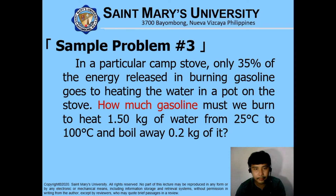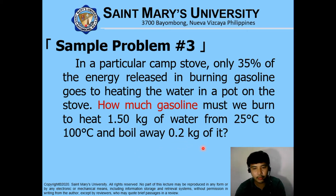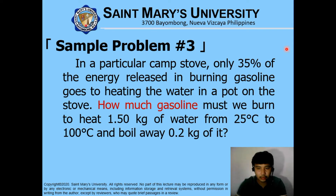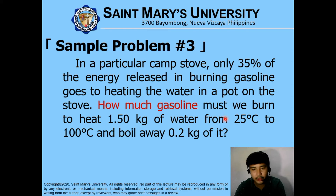For sample problem number three: in a particular camp stove, only 35% of the energy released in burning gasoline goes to heating the water in a pan. How much gasoline must be burned to heat 1.5 kilograms of water from 25 degrees Celsius to 100 degrees Celsius and boil away 0.2 kilograms of water? Analyzing this problem requires us to use two equations: the first one is for the temperature change from 25 to 100 degrees Celsius, using the specific heat formula.